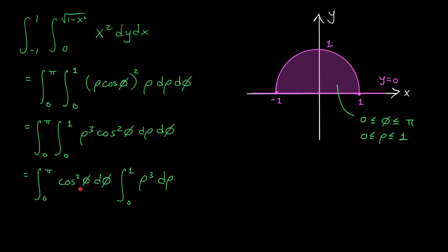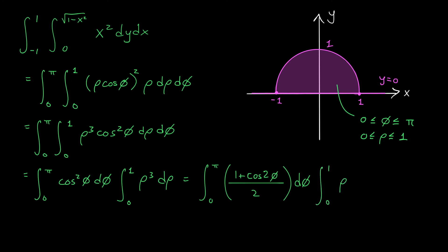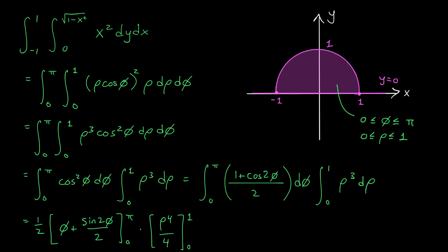I'm not sure how to find an antiderivative for cos squared phi off the top of my head, so I'll apply a trig identity and write it as the integral from 0 to pi of (1 plus cos 2 phi) all divided by 2, d phi. This is a handy trig identity to keep in your back pocket. We then multiply by the integral from 0 to 1 of rho cubed d rho. Factoring out the one half: the antiderivative of 1 is phi, and the antiderivative of cos 2 phi is sine 2 phi over 2. We evaluate this from 0 to pi. Plugging in pi gives pi plus sine 2 pi over 2, and plugging in 0 gives minus 0 minus sine 0 over 2.